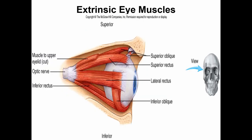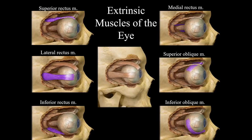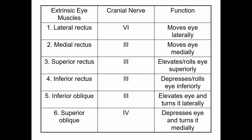The extrinsic eye muscles include the superior oblique, superior rectus, lateral rectus, inferior oblique, and inferior rectus. Each eye muscle has a specific cranial nerve innervating it. The lateral rectus is managed by cranial nerve six, and the superior oblique by cranial nerve four. Each muscle has a specific function listed accordingly.